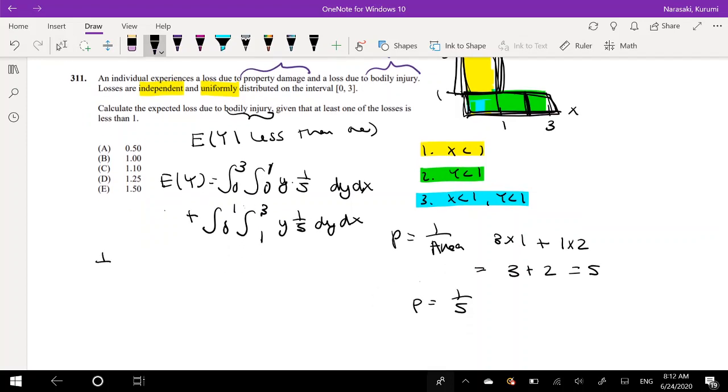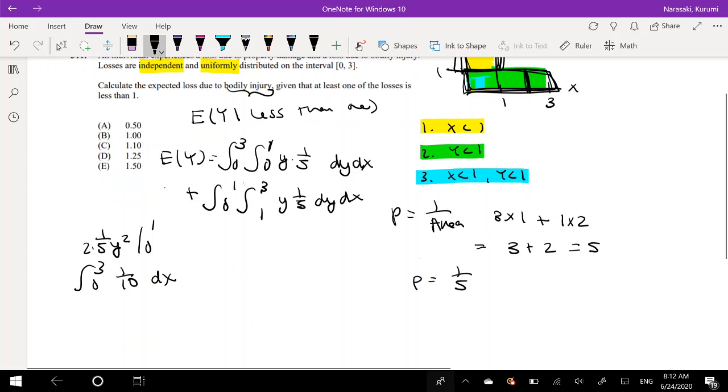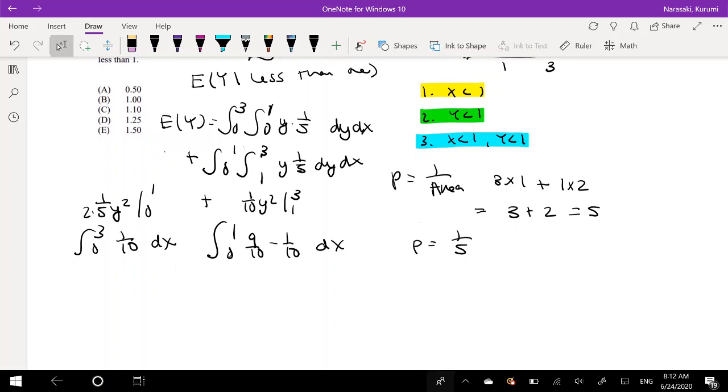So that's 1 fifth y squared times 2, solving from 0 to 1. So that's just 1 tenth dx, solving from 0 to 3. And then the second one is same thing. It will be y squared 1 tenth, solving from 1 to 3. So that's 9 tenth minus 1 tenth, integrating from 0 to 1 for the dx. Okie dokie, let me jokey. Let me simplify this. This simplifies to 8 tenth, 0 to 1 dx. And this one stays the same.